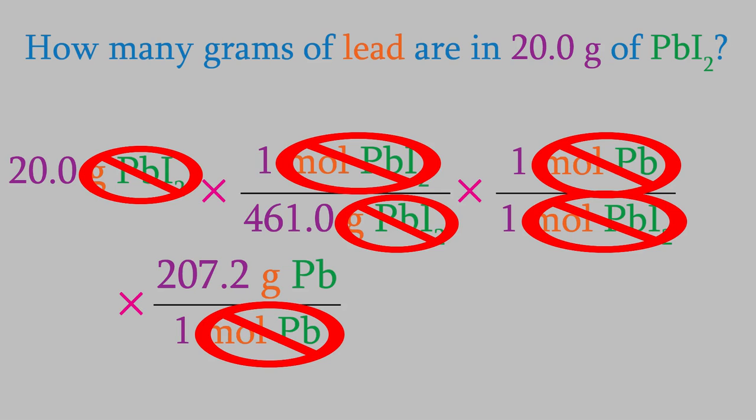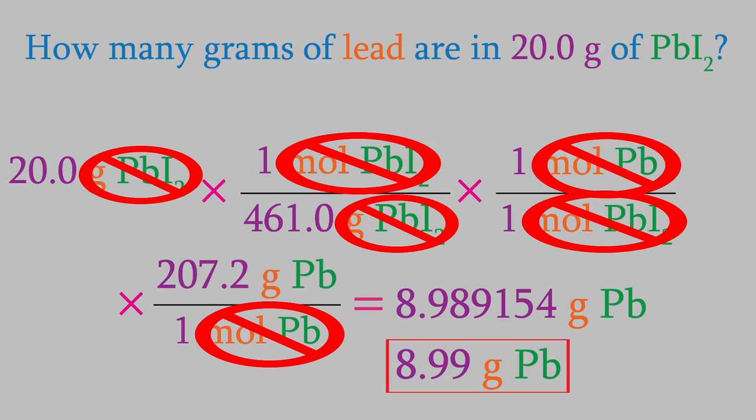We'll multiply all the numerators together and divide by all the denominators. When we do that, we get an answer of 8.989154 grams of lead. If we now look at the numbers in our fractions, we can see that this one has 3 sig figs, this one has 4, and this one has 4. So our answer should have 3, which gives us 8.99 grams.